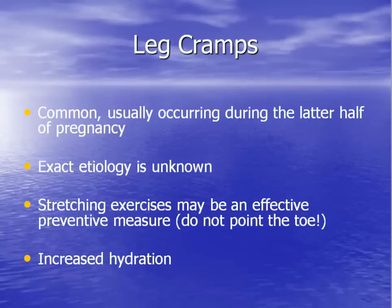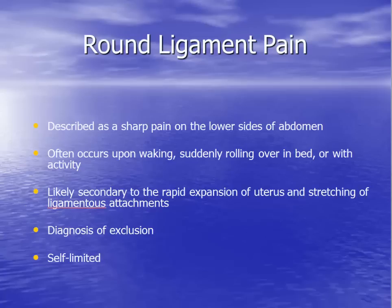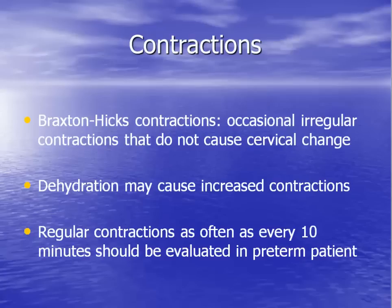Leg cramps can cause severe pain in the calves. Patients should be warned not to point their toes and should stay well hydrated. Round ligament pain is lower lateral abdominal discomfort that occurs from stretching of the round ligaments with patient movement. Pain is usually sharp, associated with movement, and relieved with rest. It is a diagnosis of exclusion because many conditions can cause abdominal pain in pregnancy. Braxton-Hicks contractions are episodes of uterine tightening that do not lead to cervical change, so labor is not present. These contractions can still be painful but often are not. Women commonly experience Braxton-Hicks contractions irregularly starting as early as 20 weeks in pregnancy.